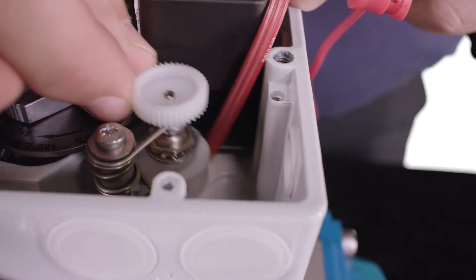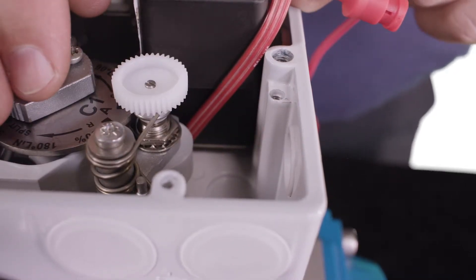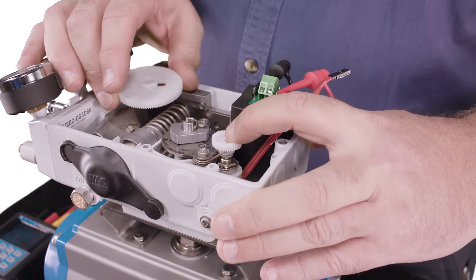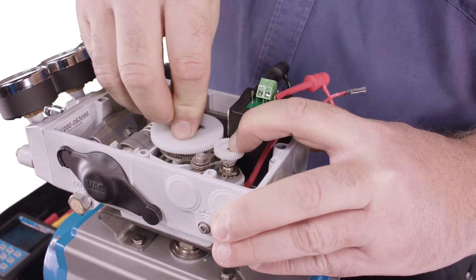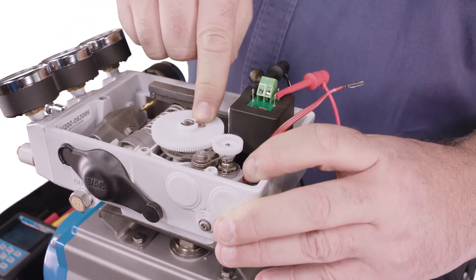Check that the potentiometer is spring-loaded, like this. Hold the potentiometer gear aside and install the drive gear over the cam nut. The locking screw should engage with this hole.